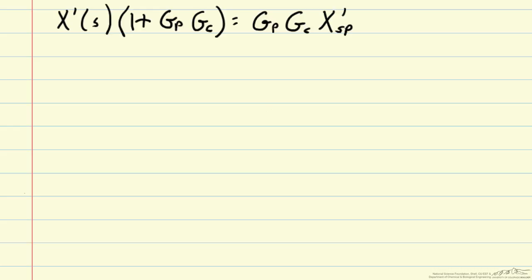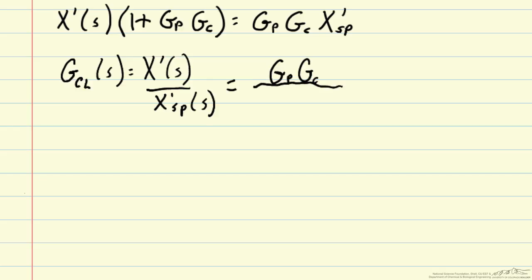Now we can go ahead and we can define our closed loop transfer function, gclosed loop, which is equal to x prime of s over x prime set point of s. And that's just equal to gp gc over 1 plus gp gc. And notice we've left off some s's on some of these terms. Sometimes we just do that for convenience, but really all of those terms do depend on s.